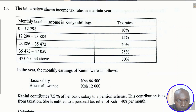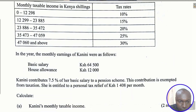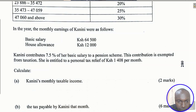Question number 20. The table below shows income tax rates in a certain year, with monthly taxable income in Kenyan shillings and tax rates in percentage. In that year, Canini's monthly earnings were: basic salary 64,500 shillings, house allowance 12,000 shillings. Canini contributes 7.5% of her basic salary to a pension scheme, which is exempted from taxation.